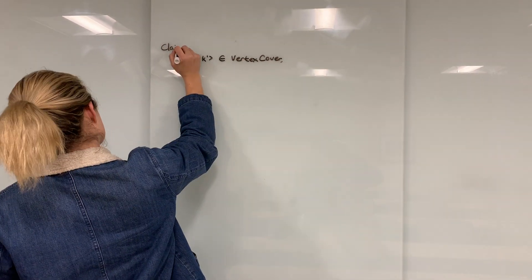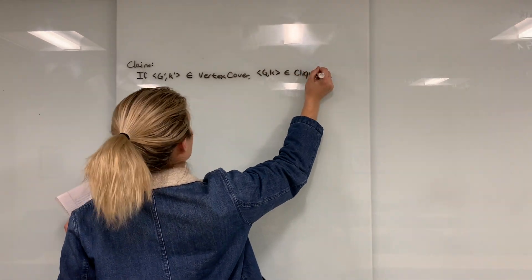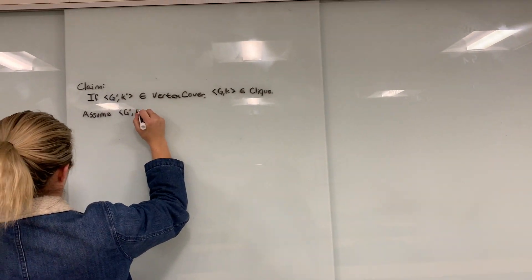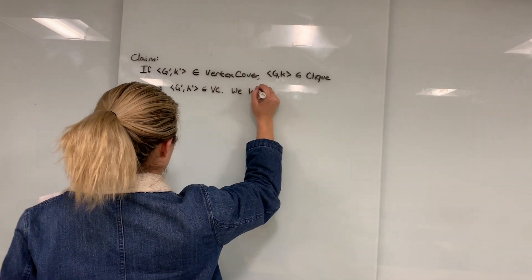So now we claim if G', K' is in vertex cover, then G, K is in clique. So we assume G', K' is in vertex cover. We know G' has a vertex cover V' of size V minus K.